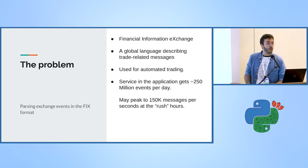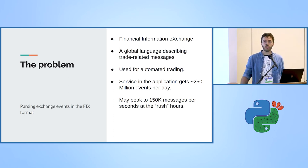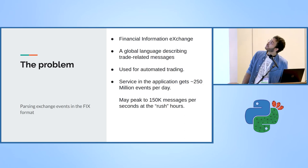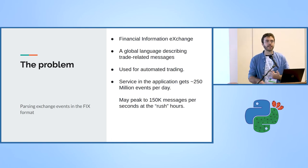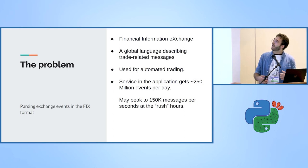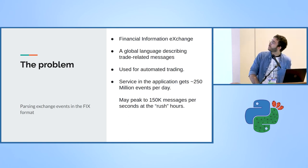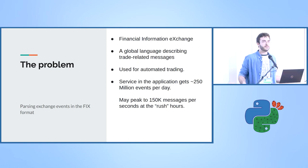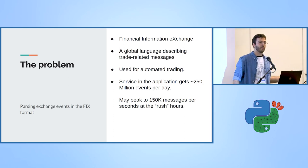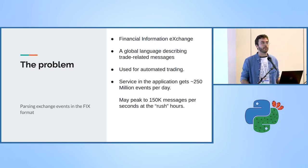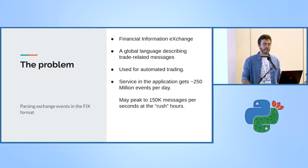Problem number one: in the market, exchanges and brokers use a global language called FIX — Financial Information Exchange. It's a format that helps us trade in the markets. I get between 200 and 300 million events per day from exchanges and brokers that I need to parse. The issue is not that number, it's the peaks — at the US market opening at 9:30 AM and closing at 4 PM I get almost 200k messages per second.